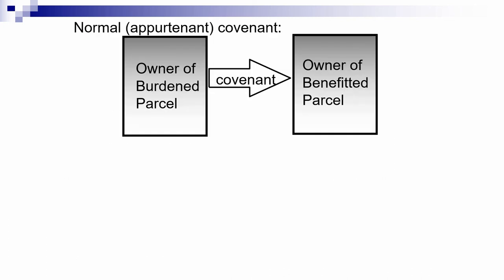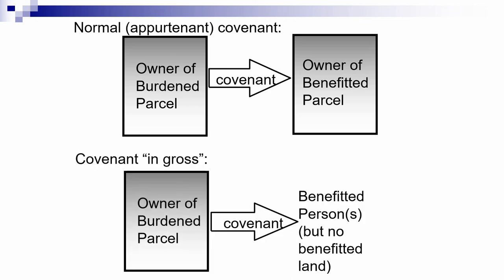If we diagram the covenant in gross situation: a normal covenant involves a promise from the owner of the burdened land to the owner of the benefited land. A covenant in gross looks different — there's an owner of the burdened land who makes a covenant that affects certain benefited persons who like and appreciate the promise, but they don't have any particular benefited land near the covenant.